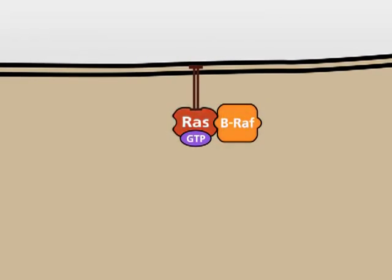In the normal cell, the active RAS-GTP complex is inactivated shortly after its activation. In this way, a permanently active MAP kinase signaling pathway and undesirable effects are avoided. RAS-GTP is inactivated by the GTPase activating protein, also known as GAP.